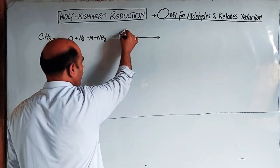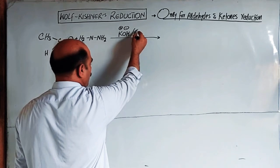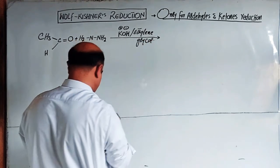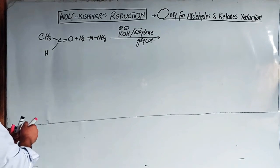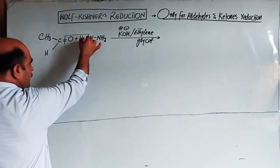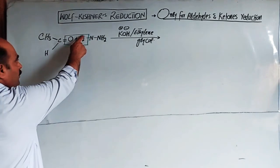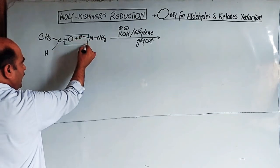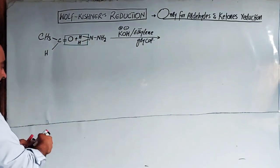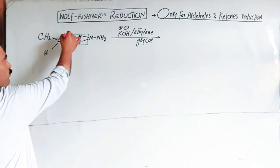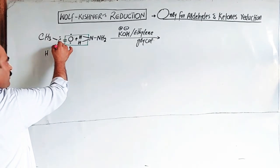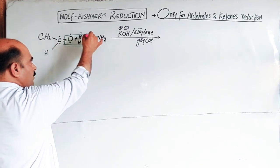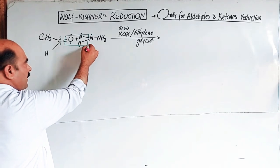Under the conditions of potassium hydroxide in basic medium with ethylene glycol, in step one the carbon-oxygen double bond interacts with hydrazine. The C=O double bond breaks, two electrons shift to oxygen, and the nitrogen and hydrogen of hydrazine connect. The N-H bond breaks as hydrogen and nitrogen rearrange.